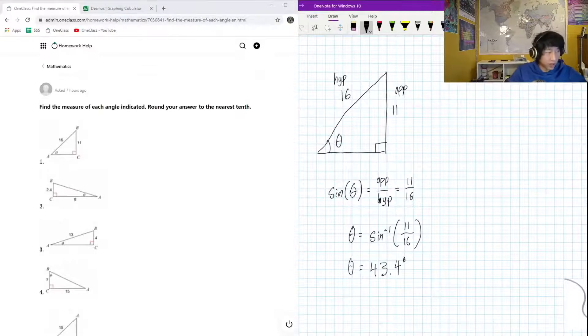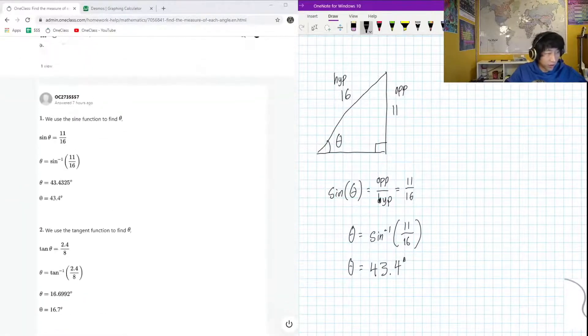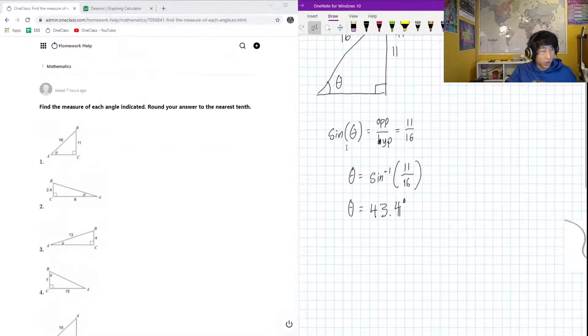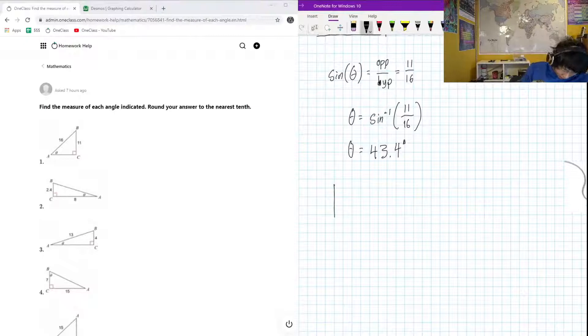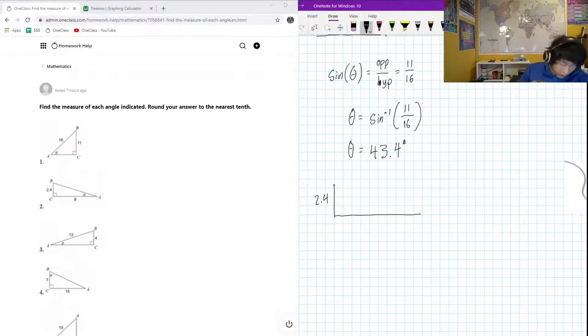Okay, so that would address part one, 43.4 degrees, awesome. We will follow a similar procedure as we look to number two. Here we have 2.4 down here, we got 8, right angle triangle, and we're looking for this angle right here.